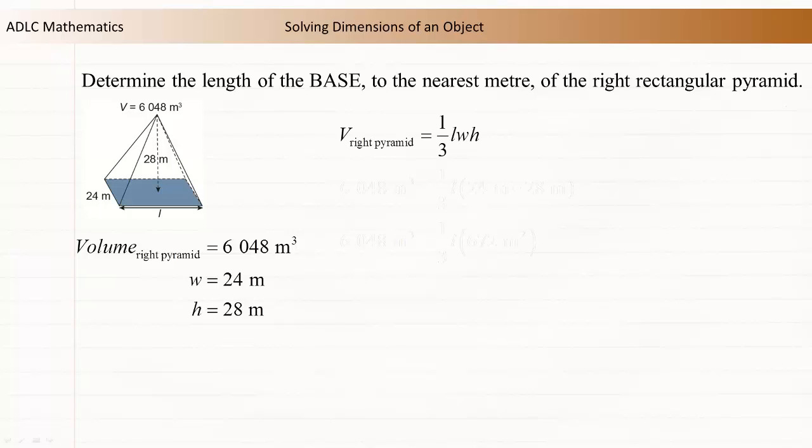The volume formula for a right pyramid is V equals one-third the length times the width times the height.